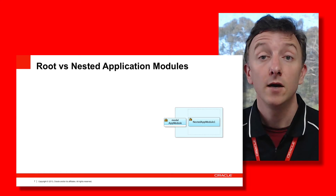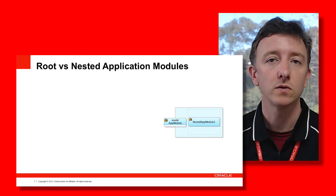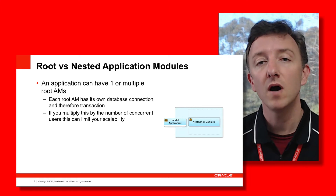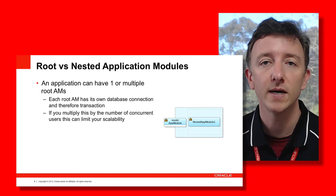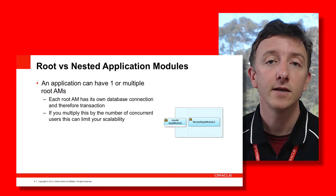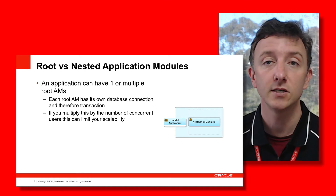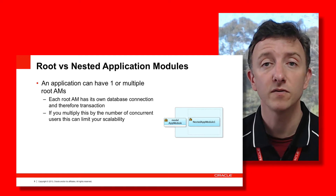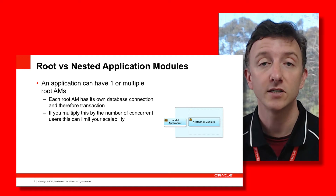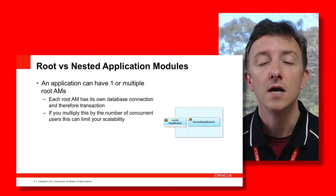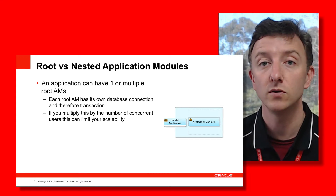Now let's consider the difference between root and nested application modules. A root application module takes a connection and transaction out with the database and provides each user session that transaction control. It is fine for applications to have more than one root application module, but per user session per root AM you're taking multiple connections and therefore transactions out with the database. As user sessions multiply, this has a wider impact on the database in terms of scalability.